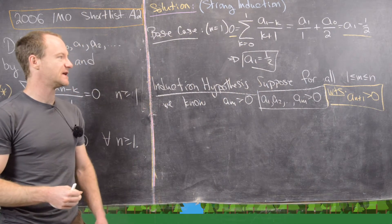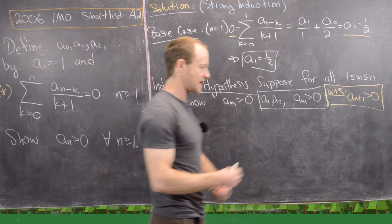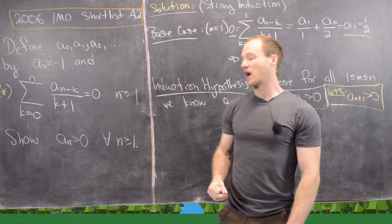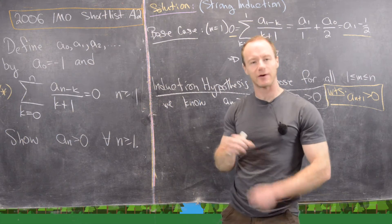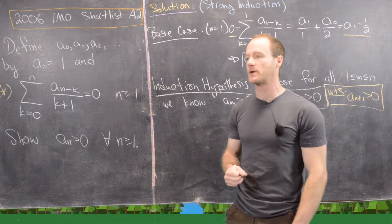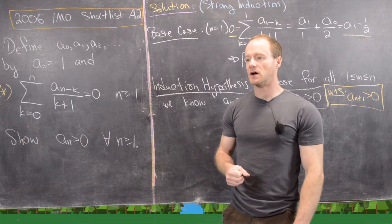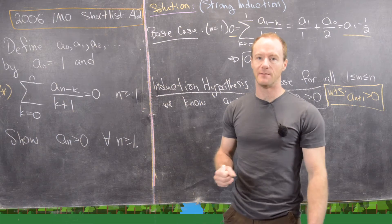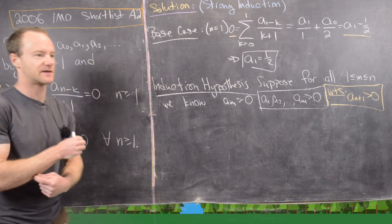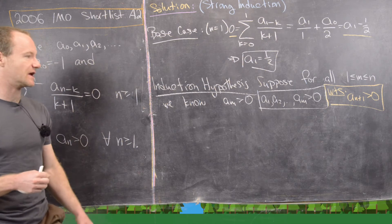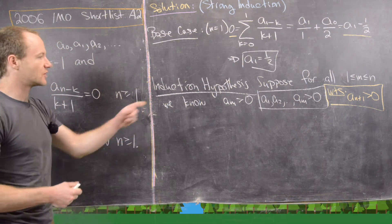Before getting into the meat of the proof, I want to point out that you might want to try to find a closed form for these numbers. I played around with that a little bit — I plugged it into a pattern finder in Mathematica and it didn't find anything. So it's not an obvious sequence.